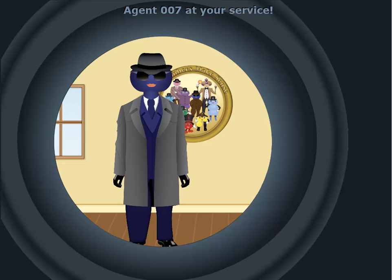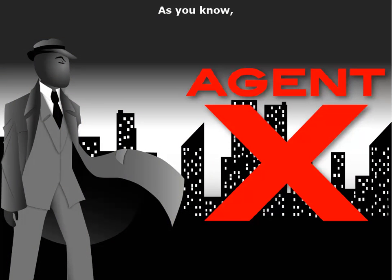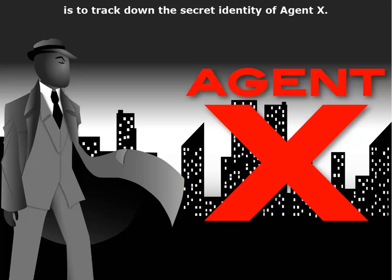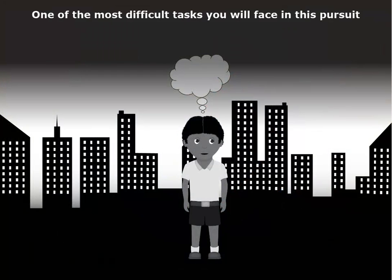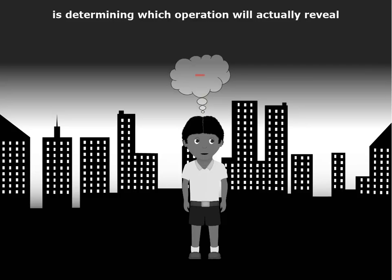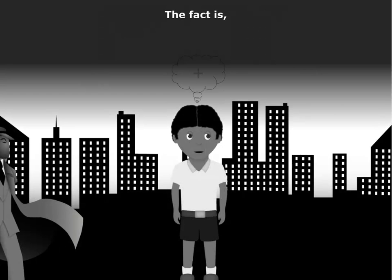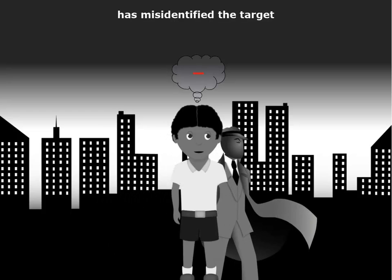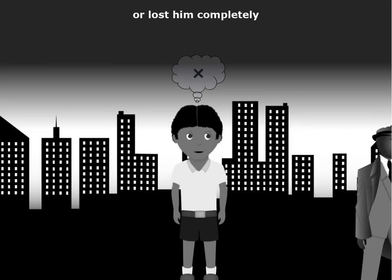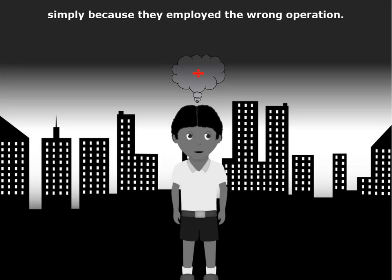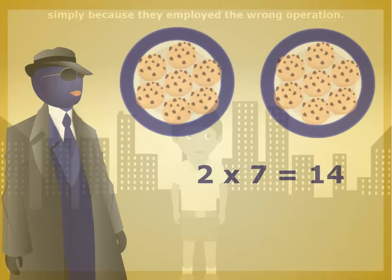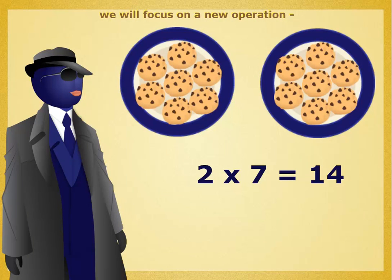Agent 007 at your service. As you know, your primary goal as an operative is to track down the secret identity of Agent X. One of the most difficult tasks you will face in this pursuit is determining which operation will actually reveal this number's hidden identity. During this session, we will focus on a new operation — the multiplication operation.